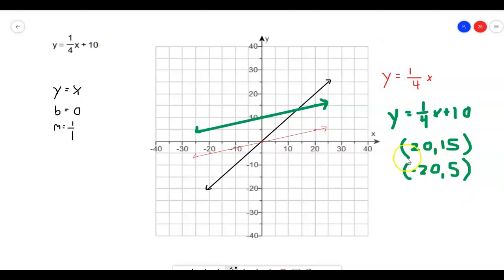All right. And let's make sure that these values also fit. So if I put the 20 in there, 1/4 of 20 is 5, 5 plus 10 is 15. That point works. If I take the negative 20, 1/4 of negative 20 is negative 5. Negative 5 plus 10 is 5. So both of these points will work for the graph.